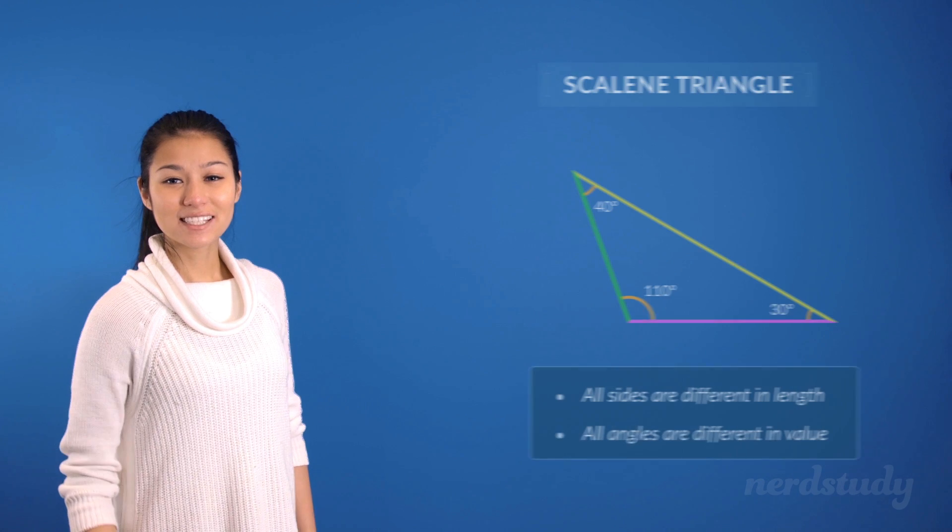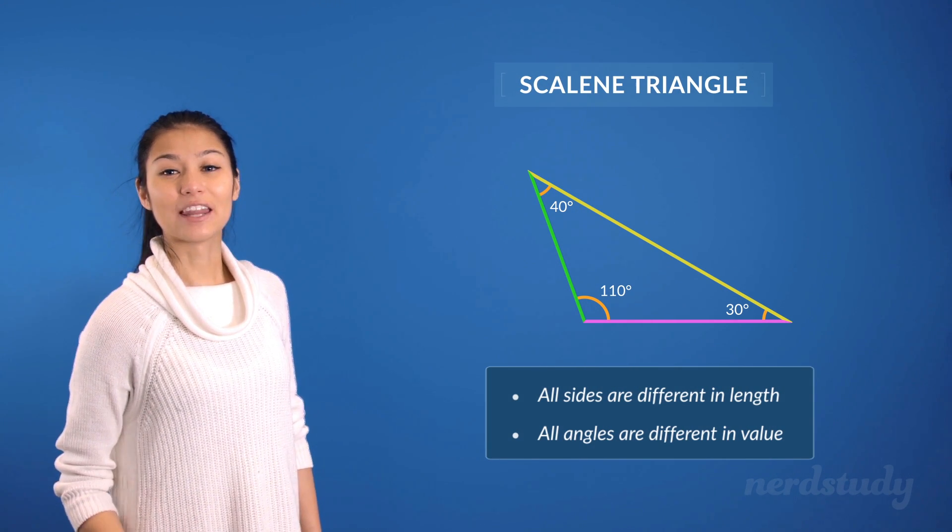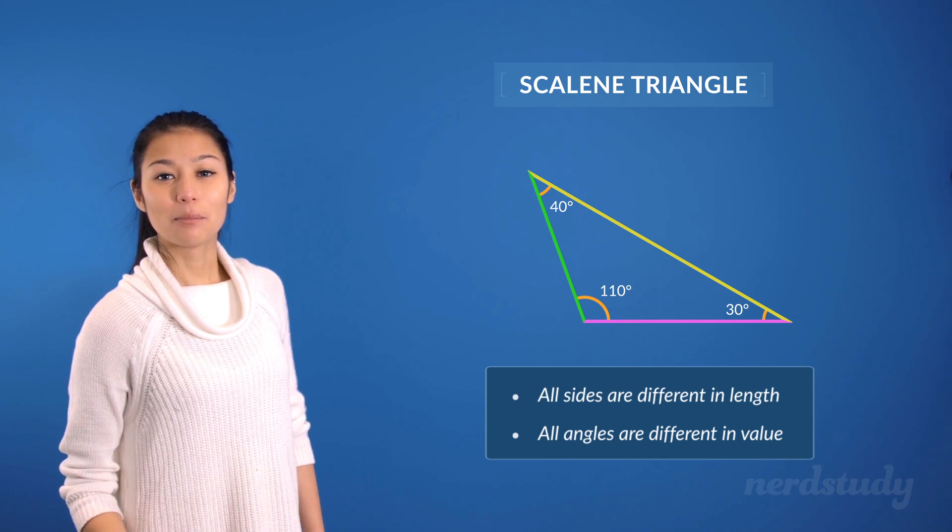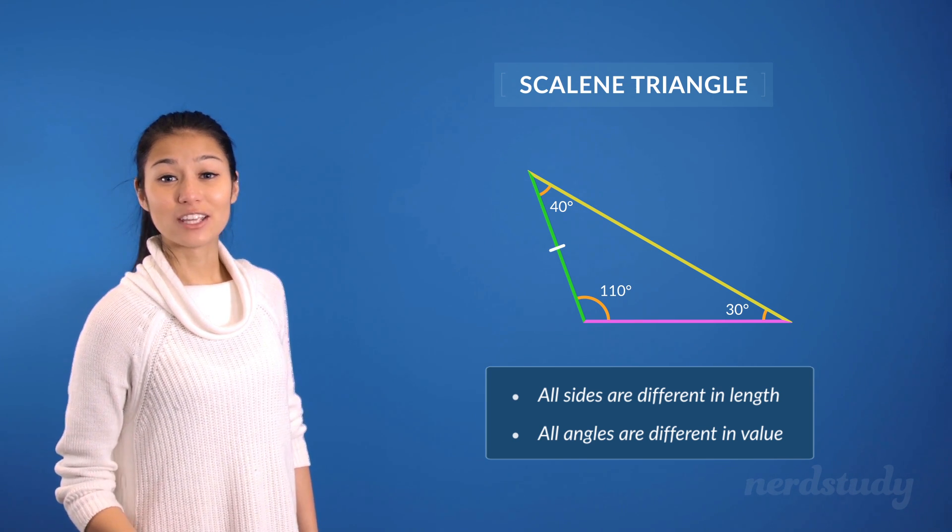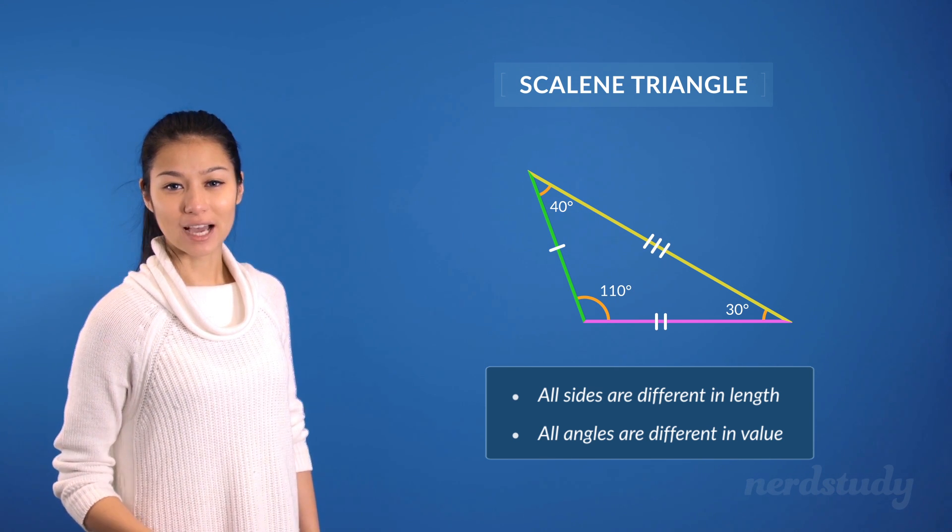However, in the situation for a scalene triangle that we were just looking at, it had three different side lengths, so we can denote that by putting a hatch mark here, then two hatch marks here, and then three over here to differentiate each side.